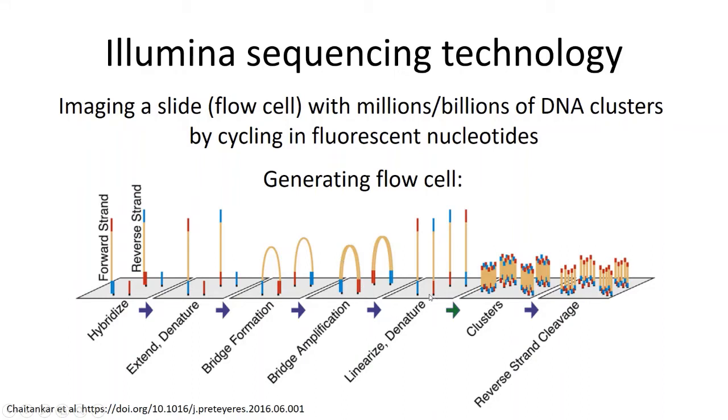Then the molecules are linearized and denatured again. This happens several times in order to create clusters, which are groups of different molecules that have the same sequence all within very close proximity on the flow cell slide.